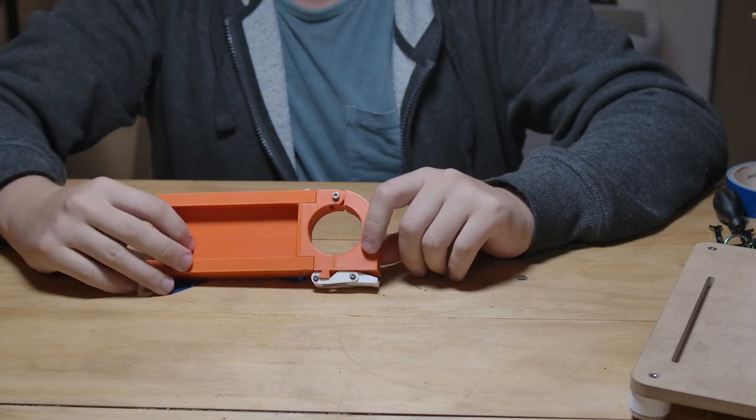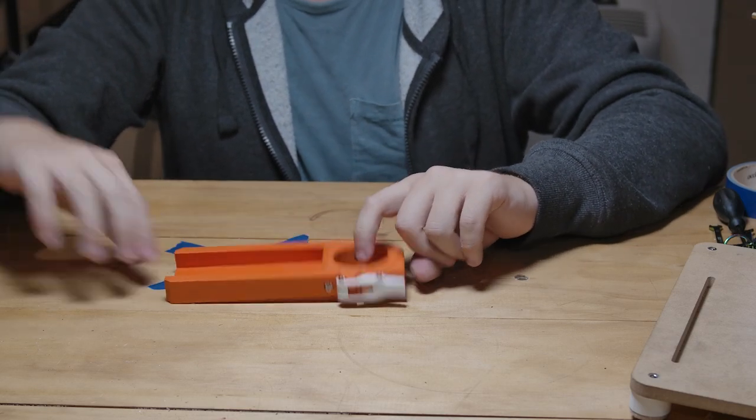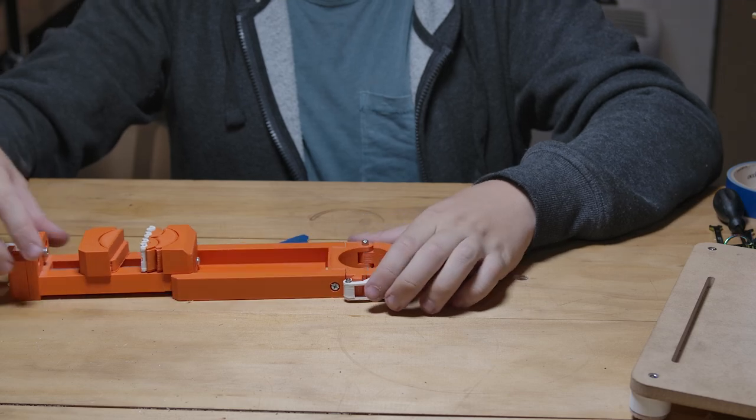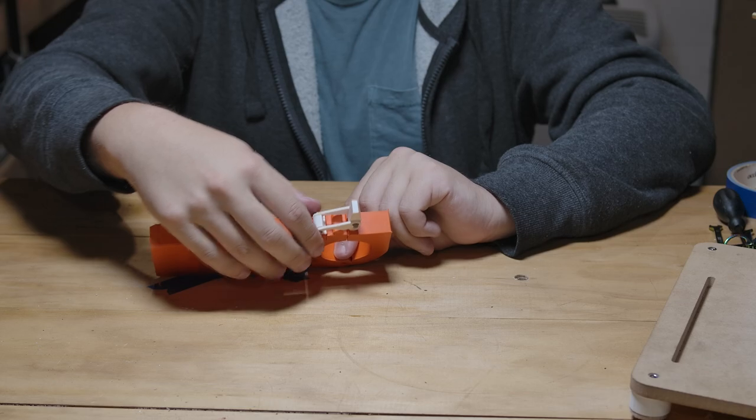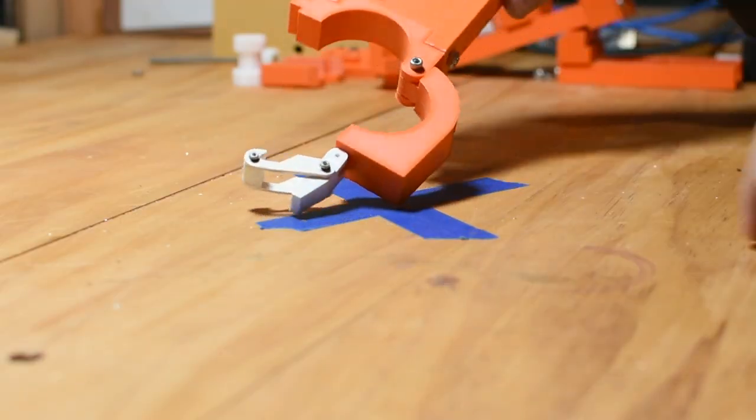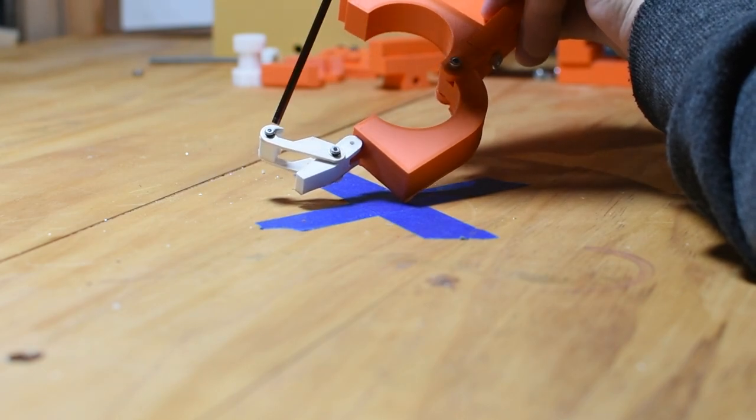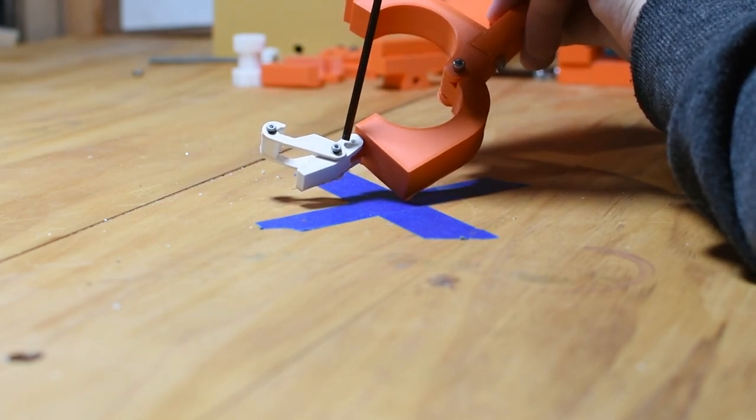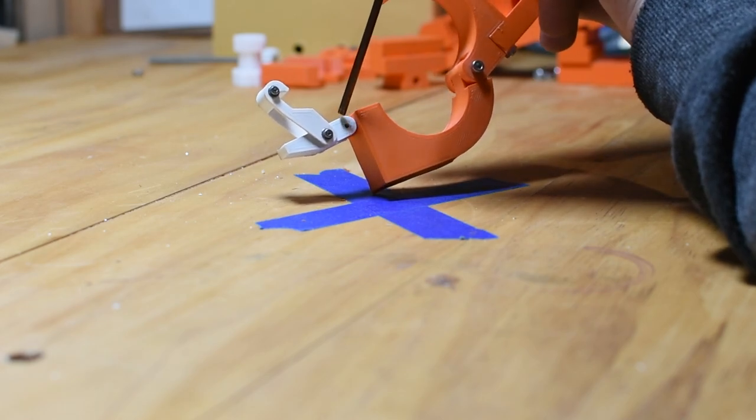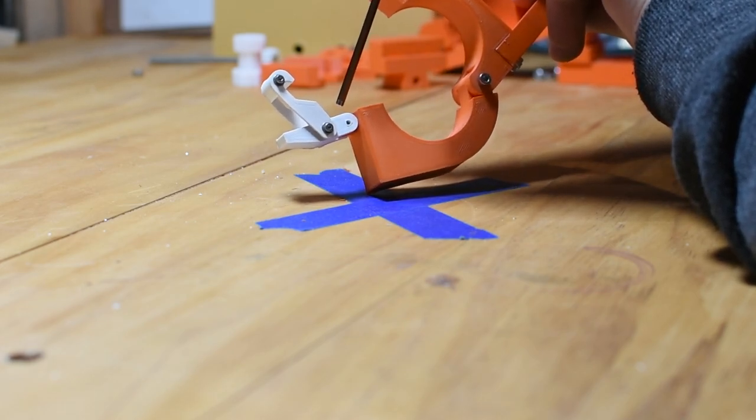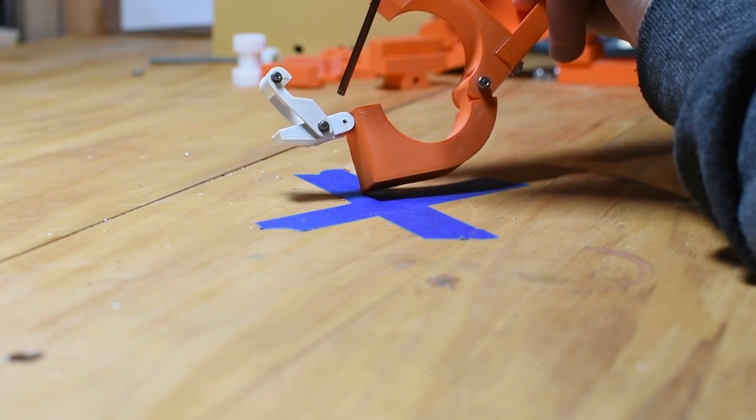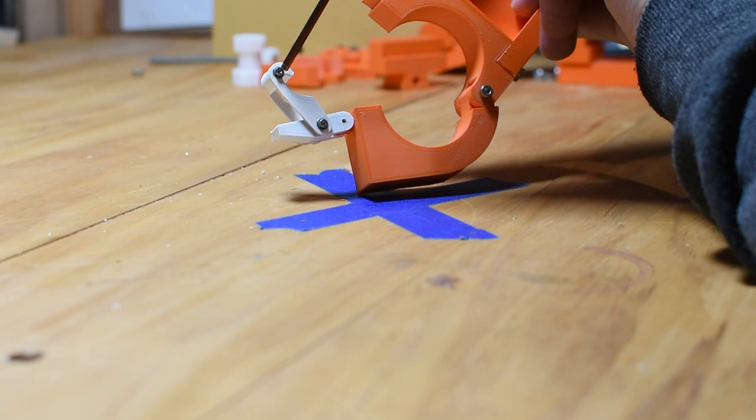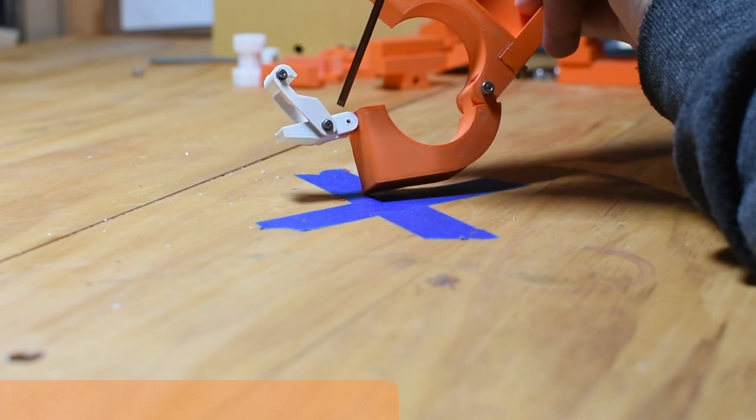The next assembly we have here is the vice swivel, swivel and linear holder mechanism that has the latch. So the latch component here has four M2 bolts that go into this middle part. But this final one has a piece of two millimeter brass rod going through it. It does not have a bolt because it needs to be flush on either side in order to work. So four M2 bolts and a piece of two millimeter rod.